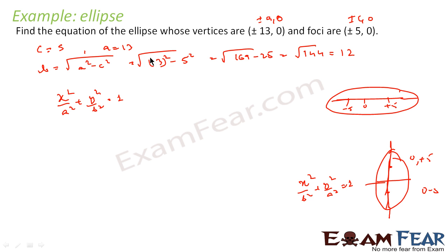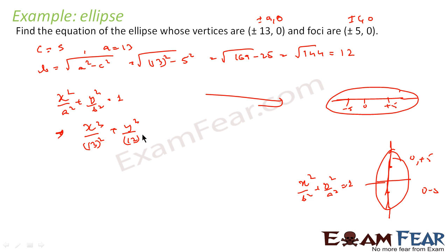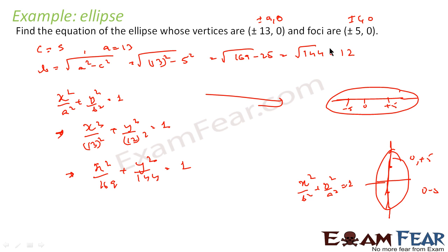But in our case the foci are of the form ±5, 0, so we use x²/a² + y²/b² = 1. Putting in the values: x²/13² + y²/12² = 1, which gives x²/169 + y²/144 = 1.